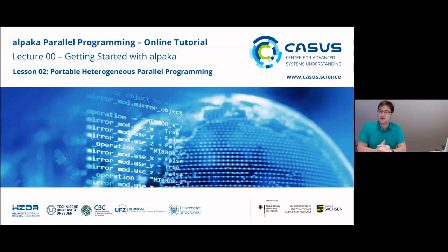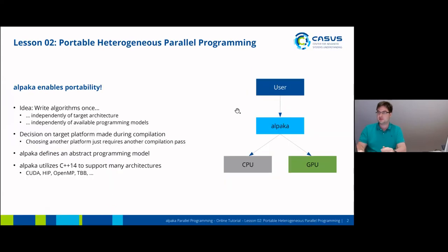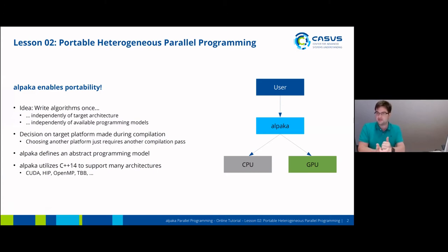This is the second part. In this part I will try to explain from a very high-level point of view the parallel programming operations with Alpaca for heterogeneous systems. Alpaca enables portability. The idea behind that is that you have an algorithm that you want to accelerate and you just ideally want to write this once, independently of your target architecture and also independently of the available programming models for your target architecture.